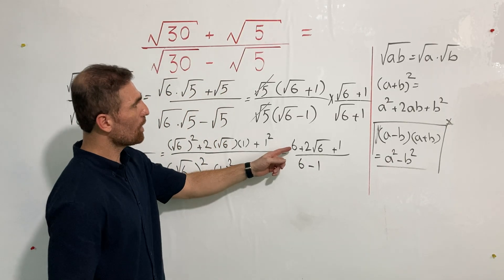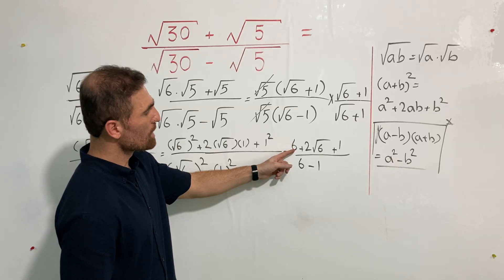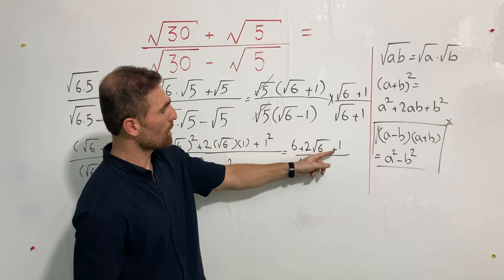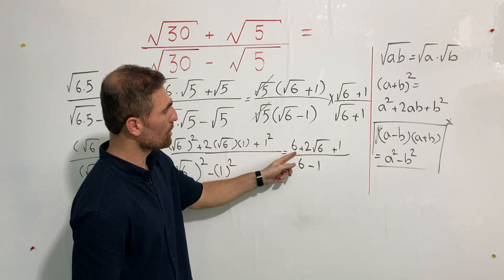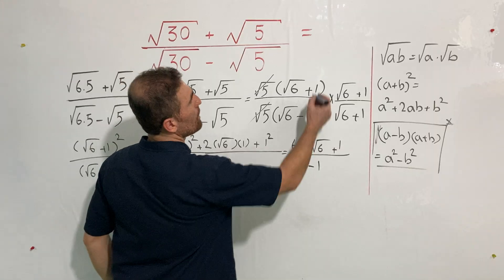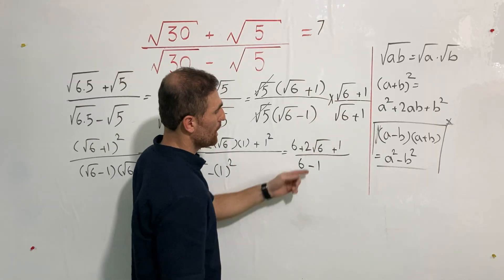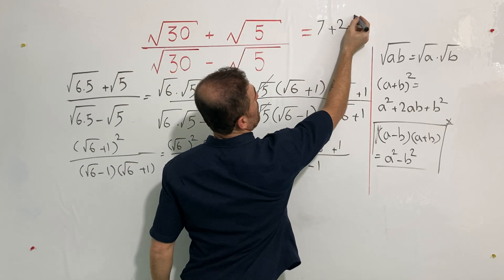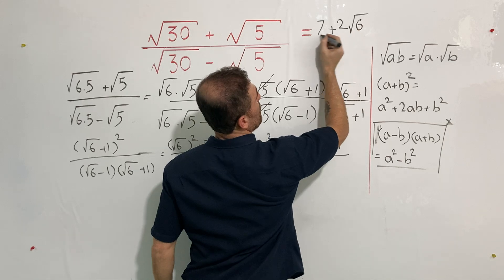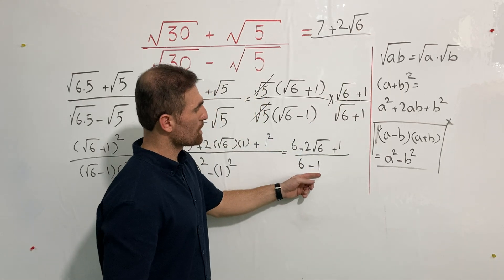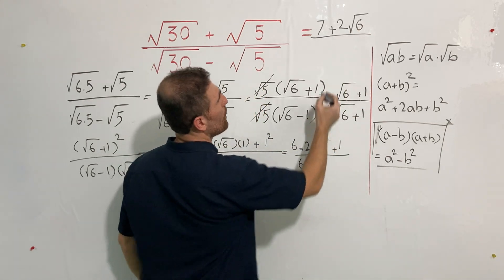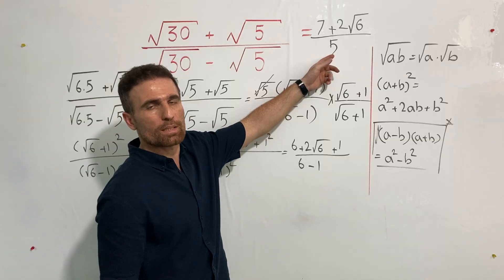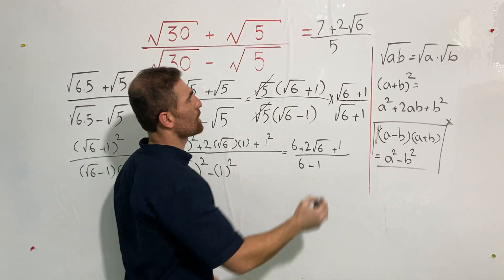Now what do we have? On top we have 6 plus 2 square root of 6 plus 1, and 1 plus 6 is 7, so the numerator is 7 plus 2 square root of 6. Over 6 minus 1, which is 5. And this is the most simplified answer to our question: (7 + 2√6) / 5.